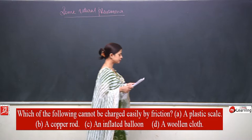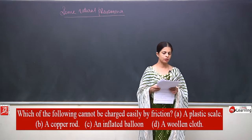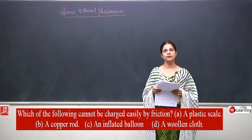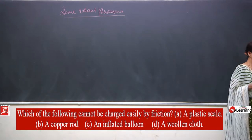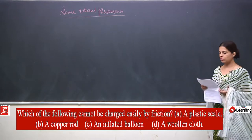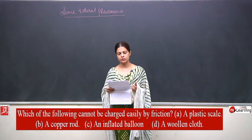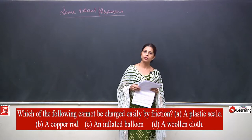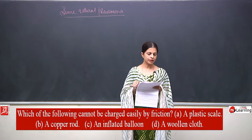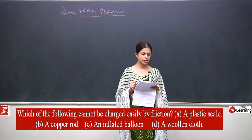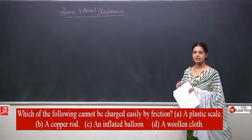Starting with question number 1: Which of the following cannot be charged easily by friction? The options are a plastic scale, a copper rod, an inflated balloon, and a woolen cloth. We know that a plastic scale, balloon, and woolen cloth all get charged.